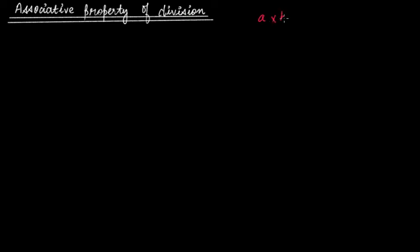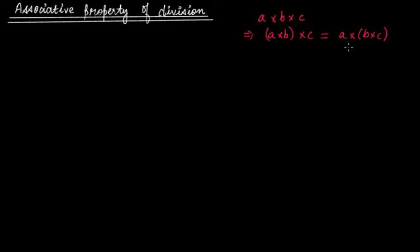We discussed that multiplication of integers always follows the associative property. That means a × (b × c) = (a × b) × c. In the first case, you group a and b together — multiply a and b first, then multiply the product with c. In the second case, you group b and c first, then multiply with a. Both give the same result. But is this also true for division of integers?